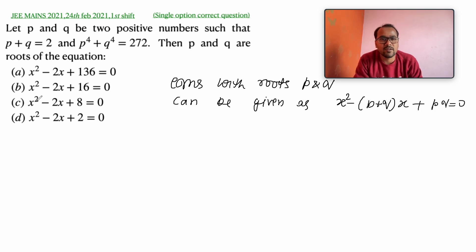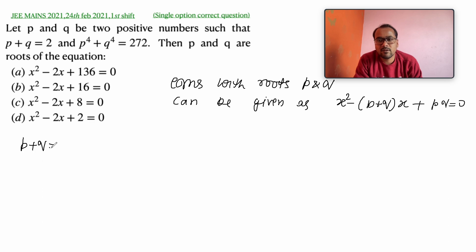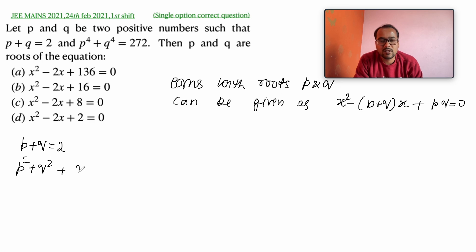Since p plus q equals 2, if I square both sides I get p squared plus q squared plus 2pq equals 4, which gives us p squared plus q squared equals 4 minus 2pq.